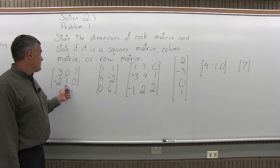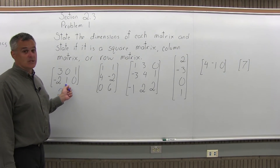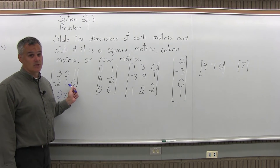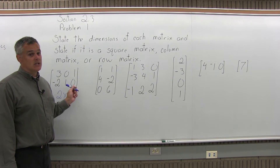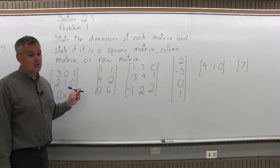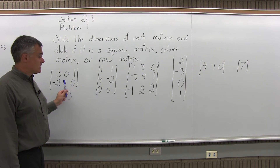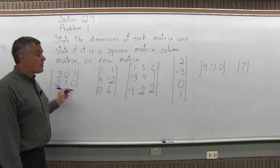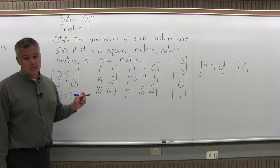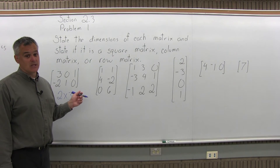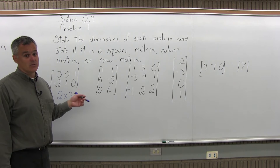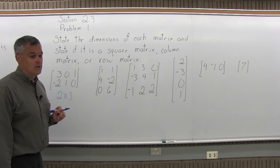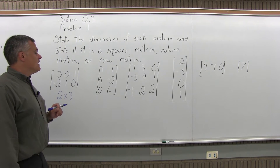It's not a square matrix, because a square matrix has to have the same number of rows as columns. It's not a column matrix, because a column matrix has only 1 column — this has 3. And it's not a row matrix, because a row matrix has only 1 row — this has 2.